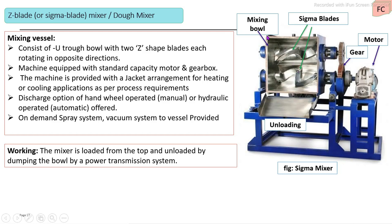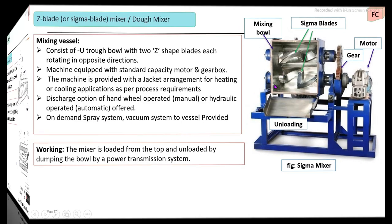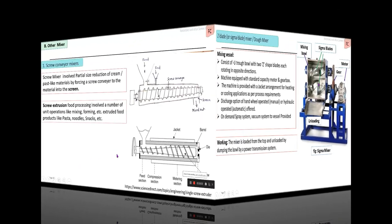The mixing vessel is externally provided with a jacket to circulate chilled water to maintain temperature during mixing. There is a loading and unloading facility for the mixing vessel. Some designs operate under vacuum, and some systems have a provision for a spray system to add ingredients during mixing.